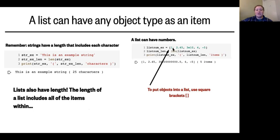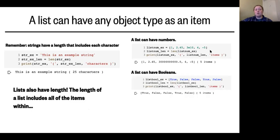A list can also have booleans — the true/false objects in Python. Here we have a variable set equal to a list with five different booleans. And of course when we do the length function, we get exactly five items in this list.